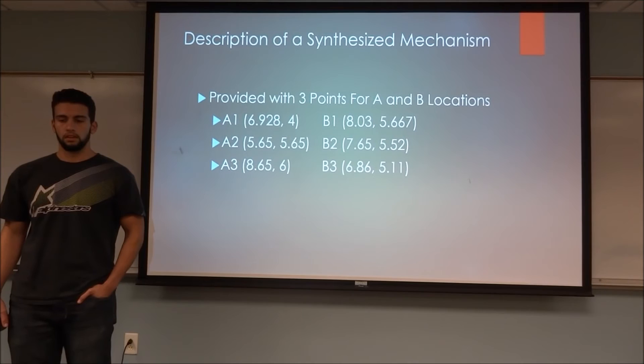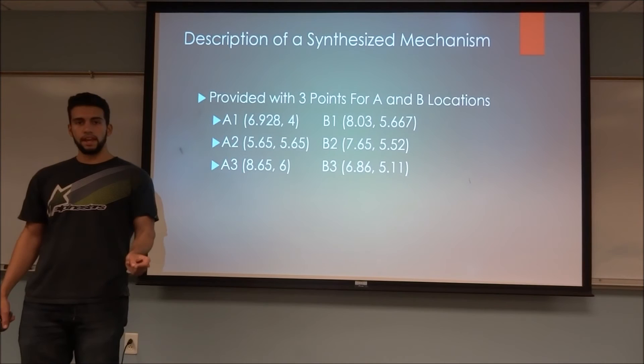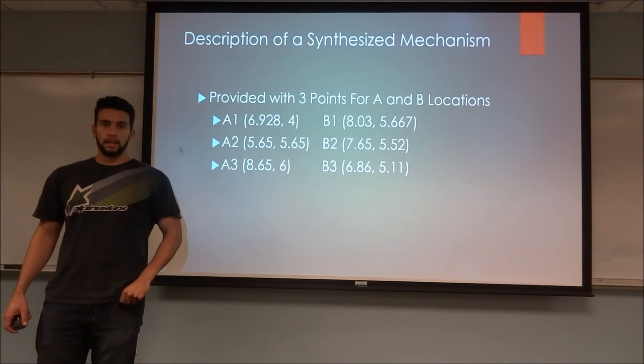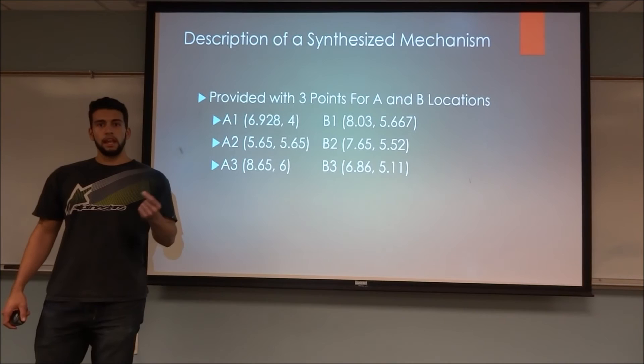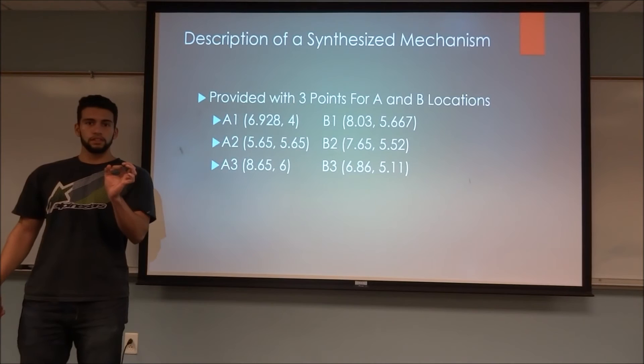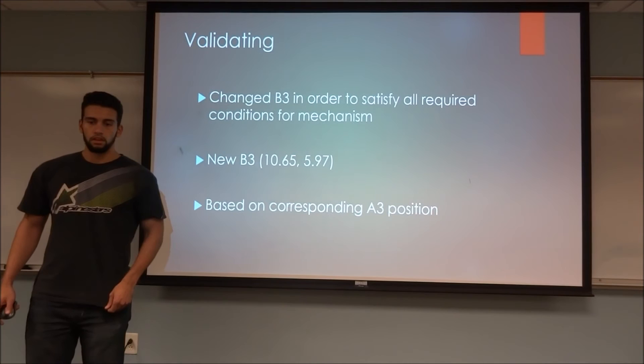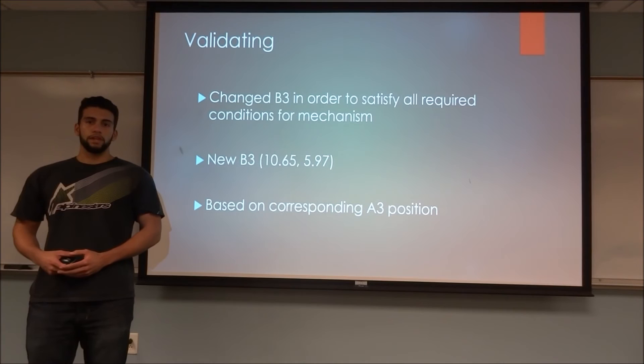For part two of the project, we were given three specific points for both A and B. These are locations on the coupler link. We were to synthesize the motion of this four bar mechanism. As you can see, these are the points that we were given. With these points, we determined A zero and B zero. These are the initial or the fixed joints for the four bar mechanism.